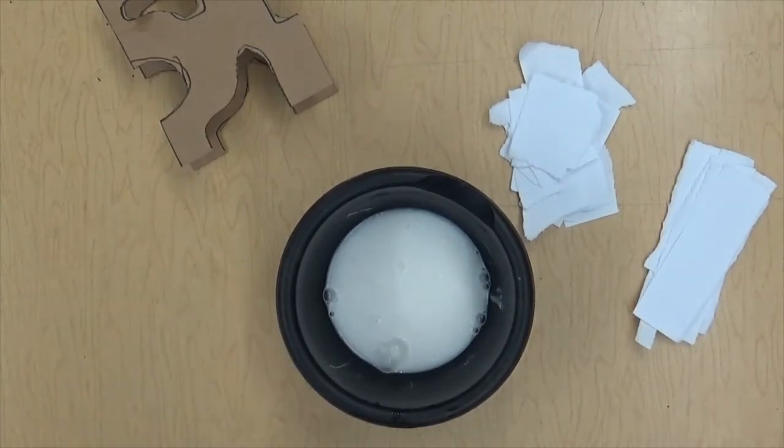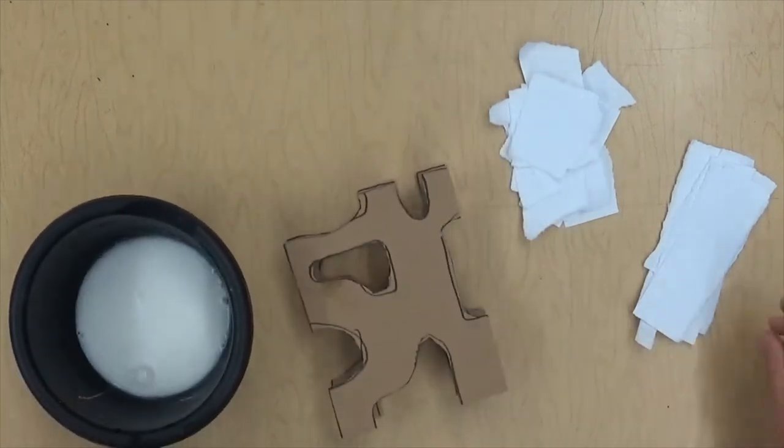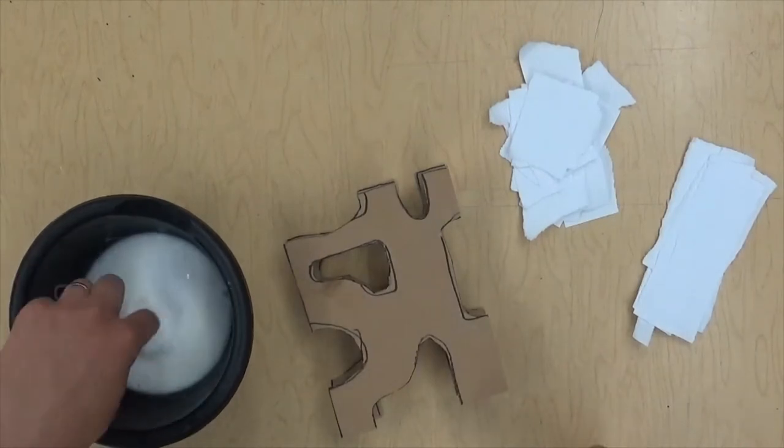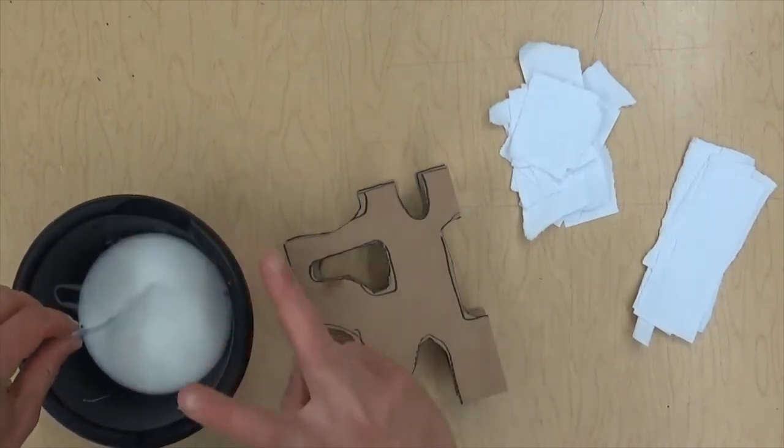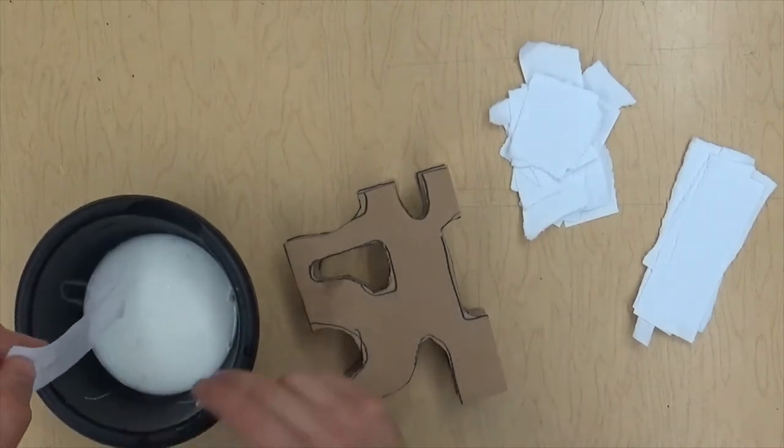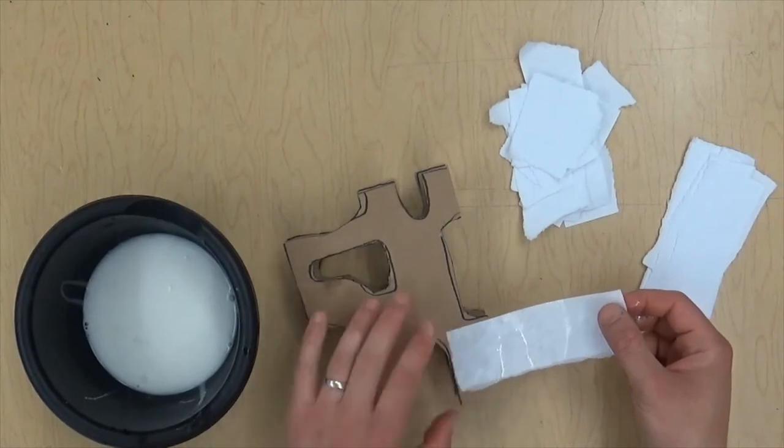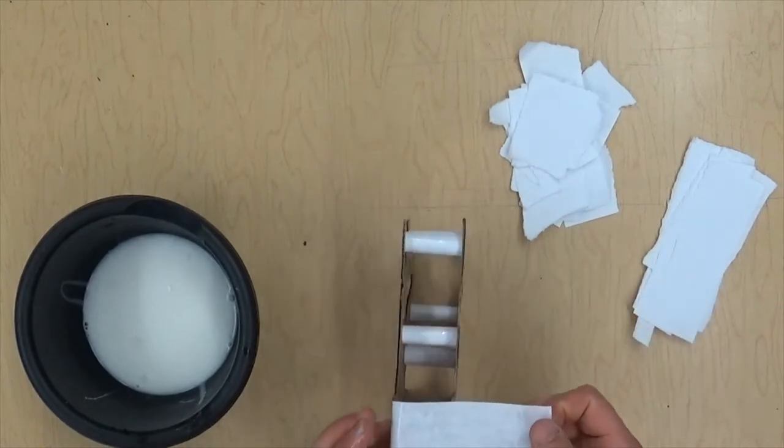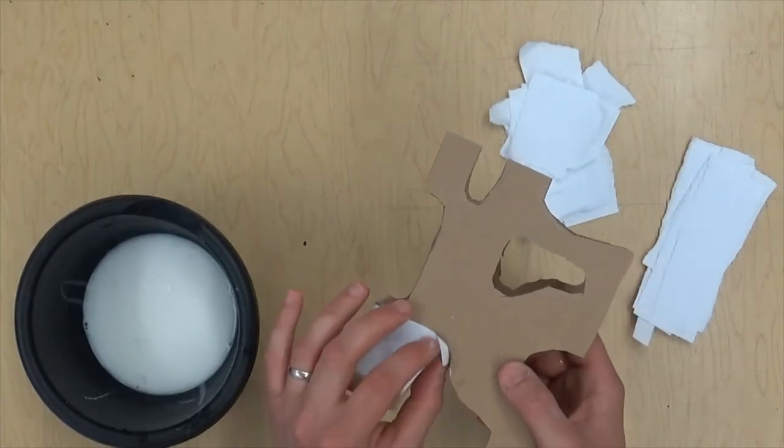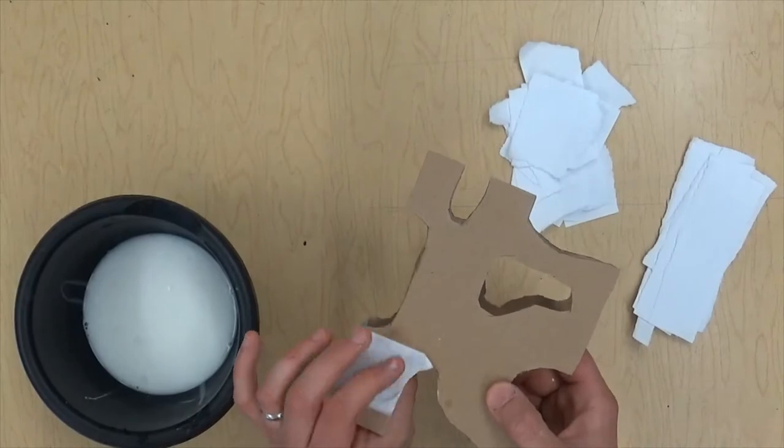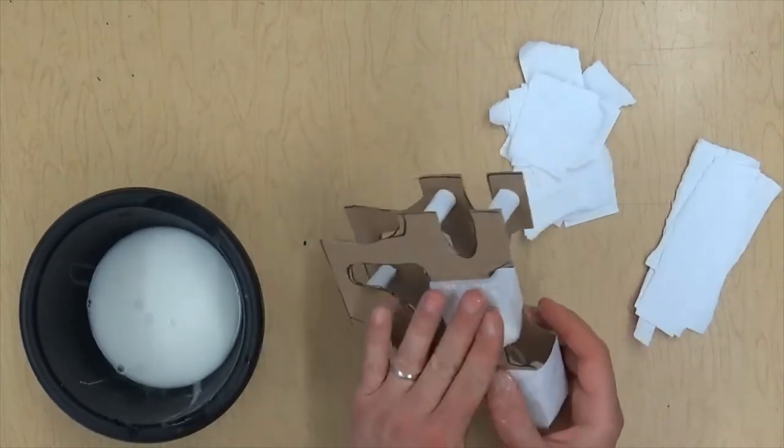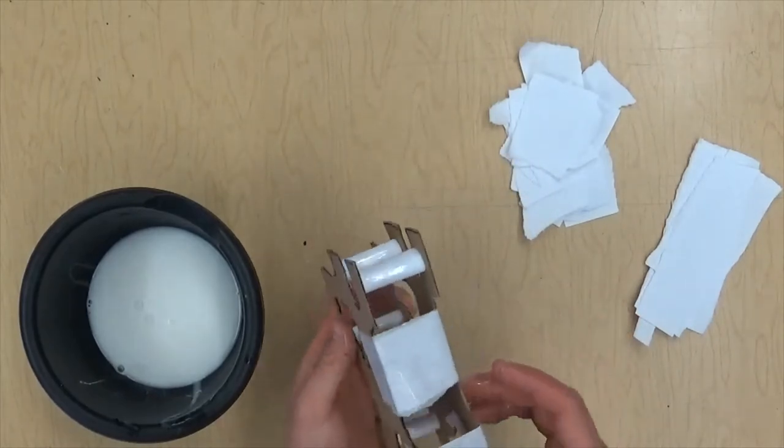Once your glue and water mixture is all mixed, we'll take our sculpture. I like to start with longer pieces for this. Just dunk them in. Make sure you get both sides so everything's wet. Take two fingers, just like they're scissors, and you just want to pull down and that'll get most of it off. And then you're just going to stick it on, wrap it around. We're going to cover our entire sculpture, but we still want to be able to see the form. So if you've got a cutaway part, you want to kind of tuck that under. Just make sure it's nice and flat.